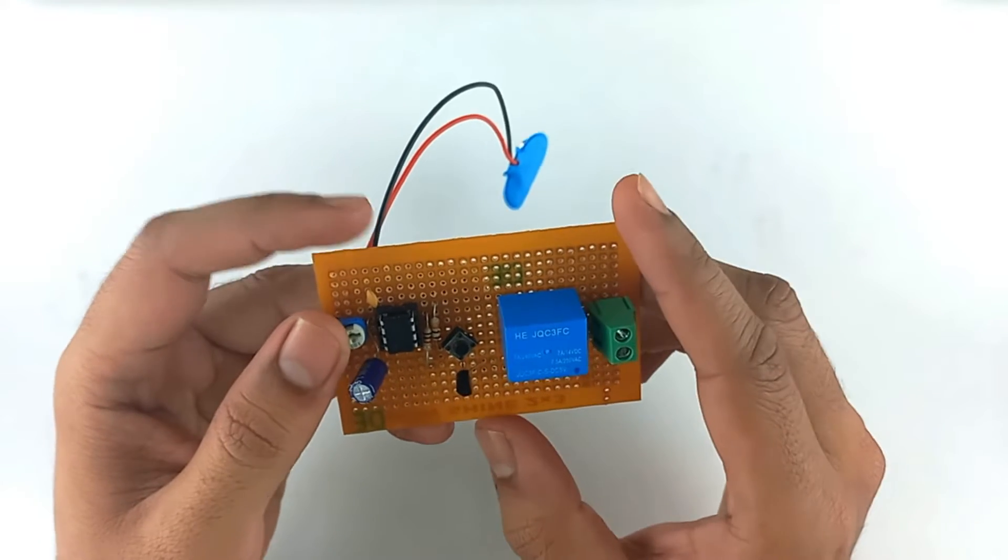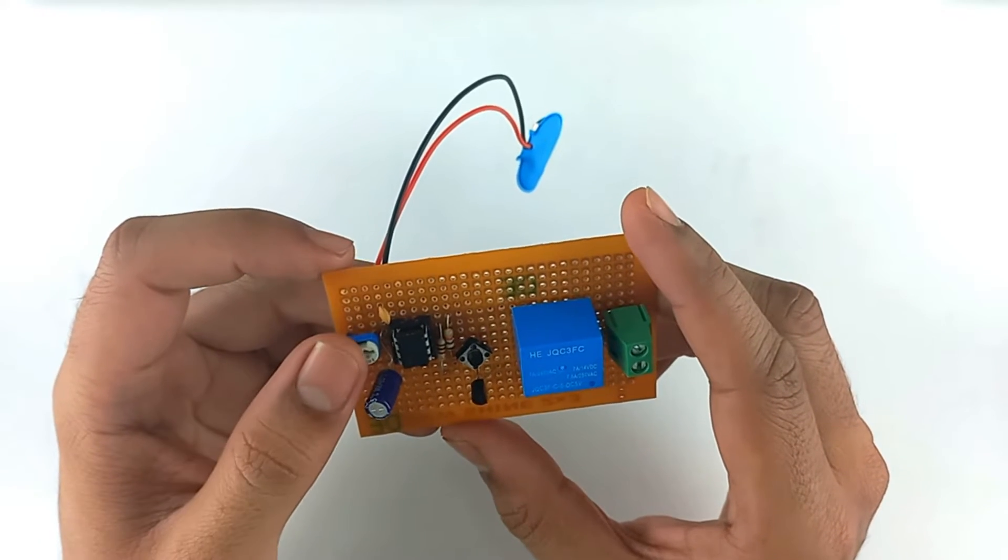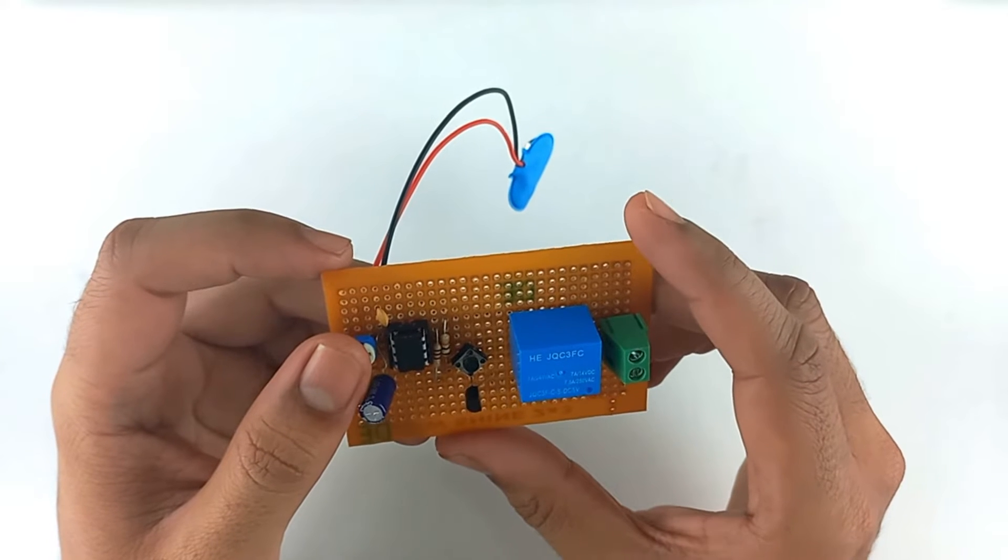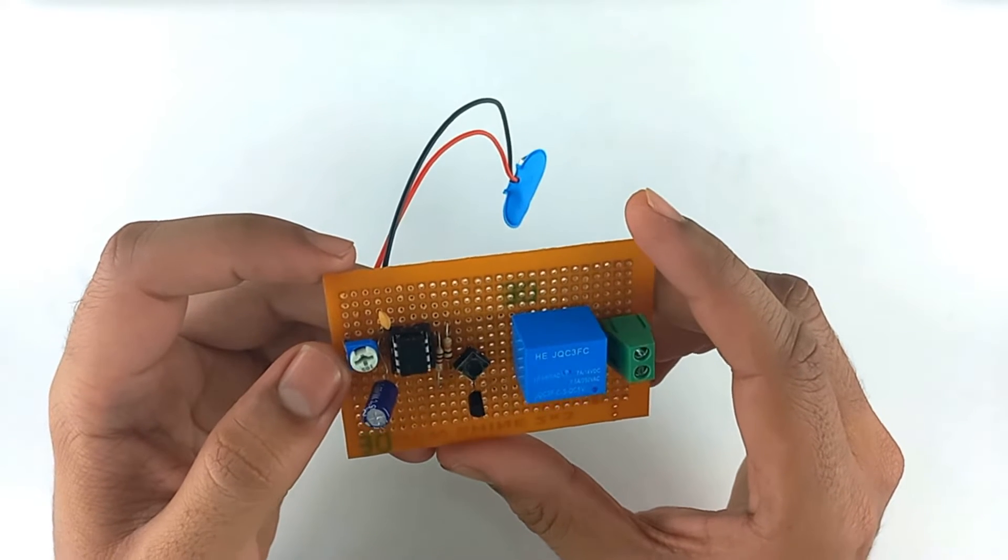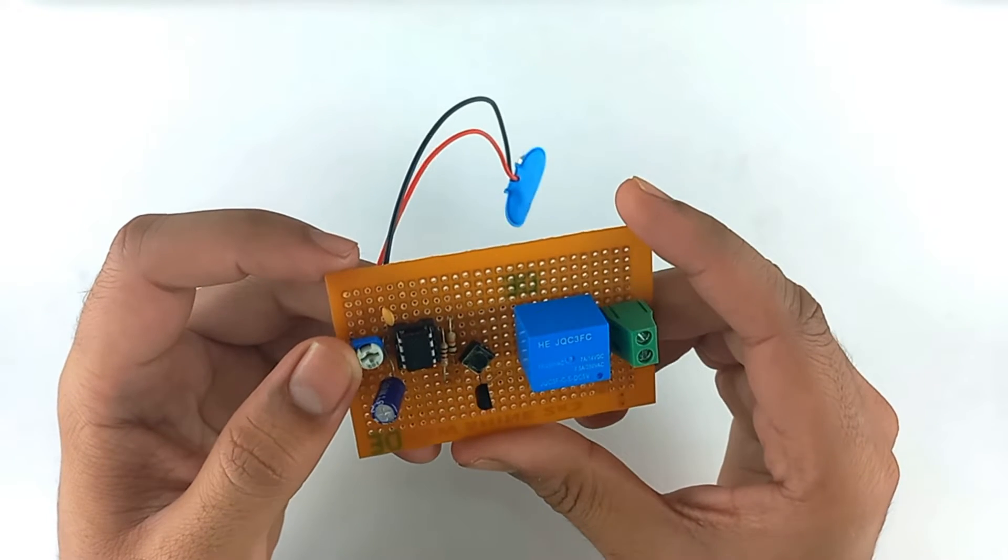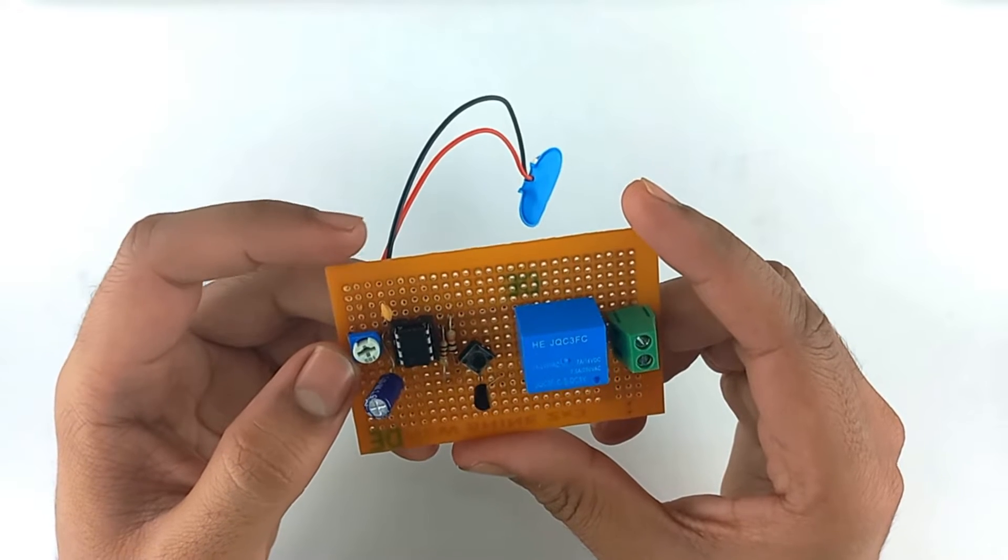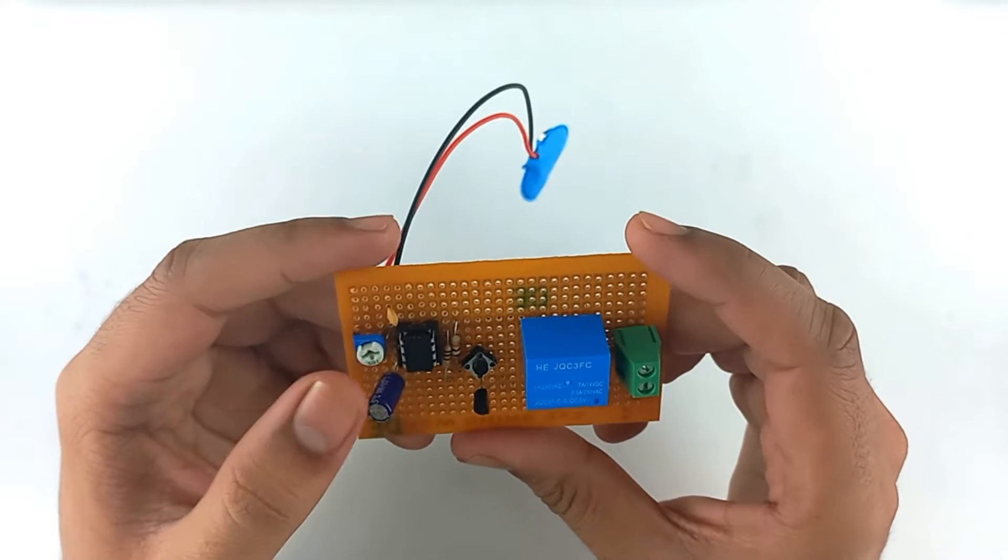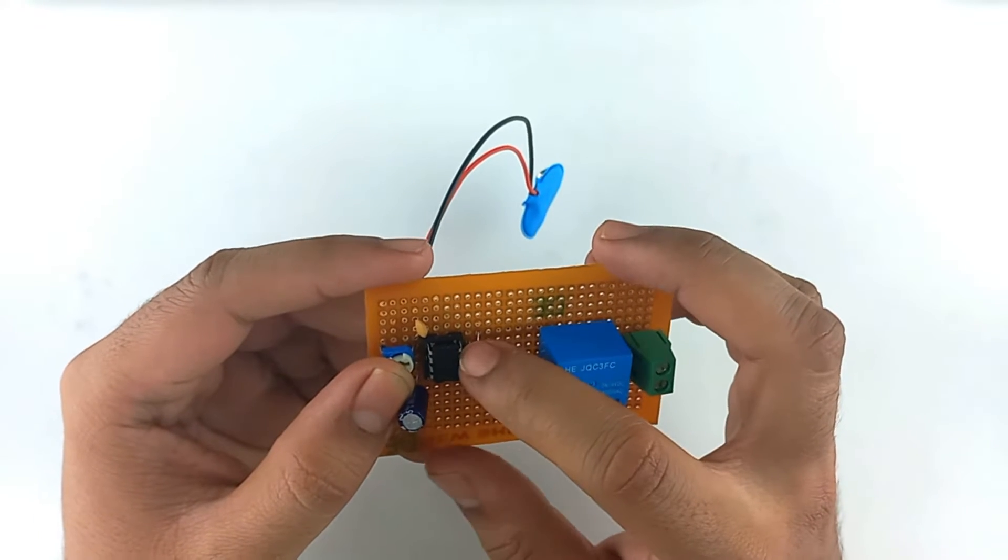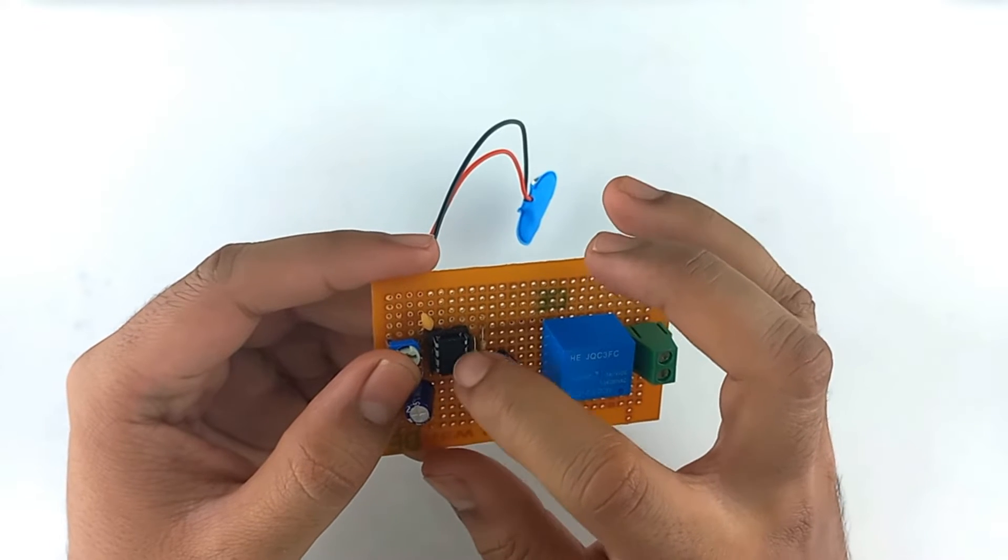Here we have a potentiometer which is connected to pin number 6 and pin number 7 that are shorted together. The other end of potentiometer is connected to pin number 8 and pin number 4 that are shorted to each other.